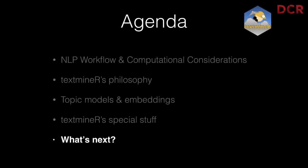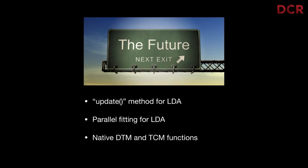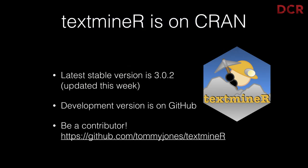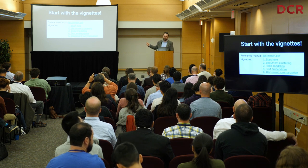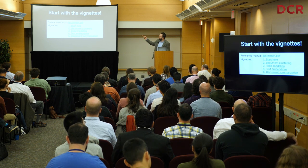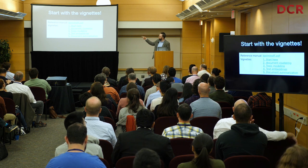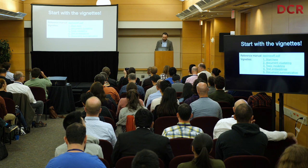In the future, I want to add an update method, because anyone who's trained a topic model and then added new data knows that when you retrain it, topic five that you loved is no longer topic five — and that's a big usability issue. textminer is on CRAN and I have stickers in the back. If you want to get started, thanks to my friend BJ who pressured me into writing a bunch of vignettes — they're available on the CRAN distribution. Thank you.